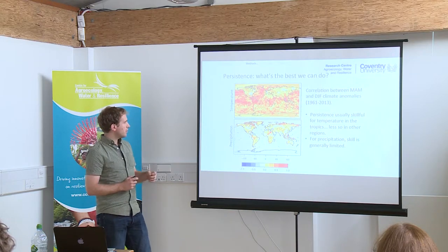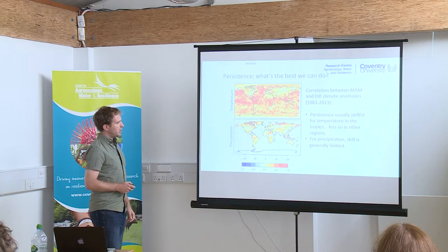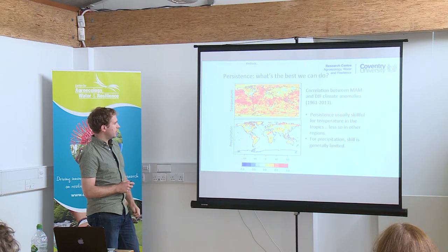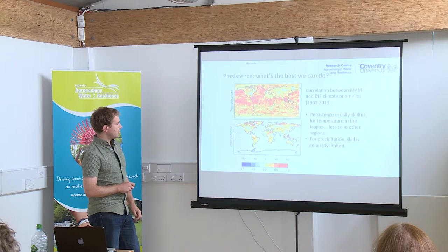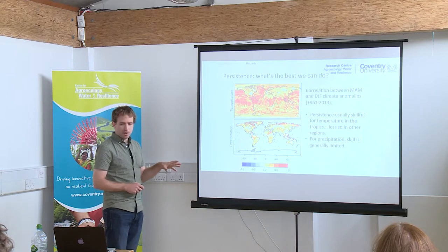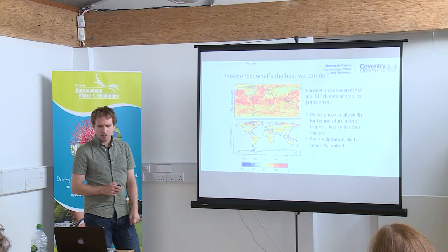Looking at what the best that we can do with persistence is, this shows correlation between March-April-May and December-January-February climate anomalies from the period 1961 to 2013. The correlation for temperature is reasonably strong, particularly in the tropics and less so in other regions. Precipitation skill is generally quite limited — but that's sort of the best we can get if we simply take persistence into account.